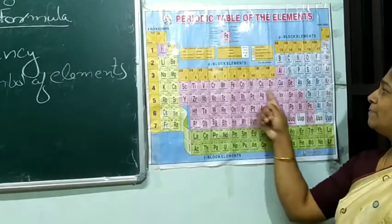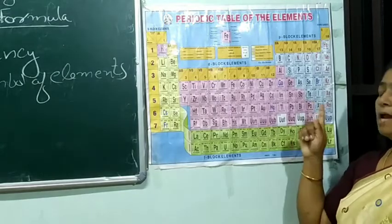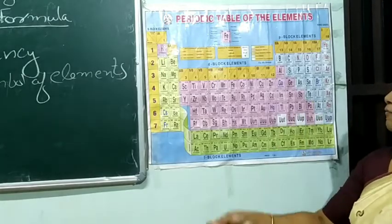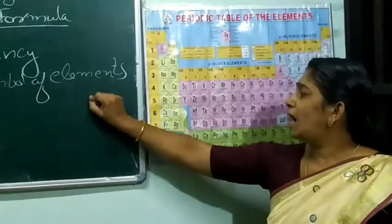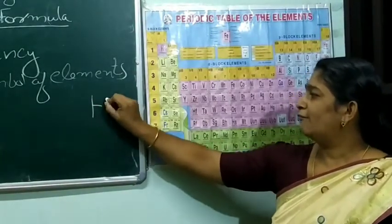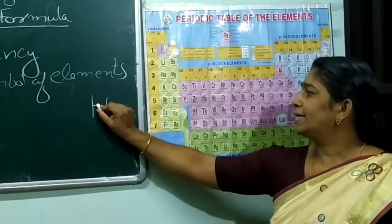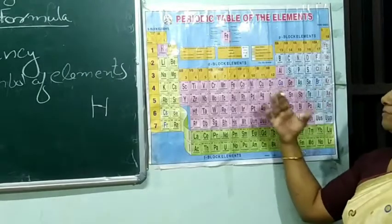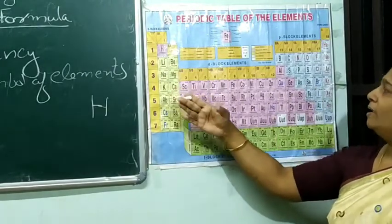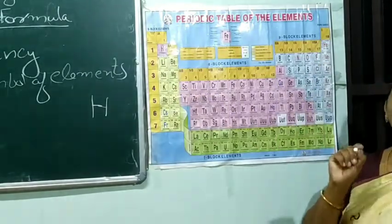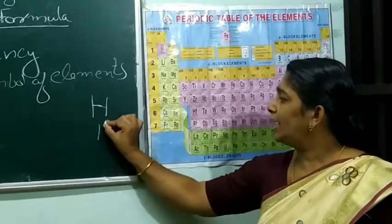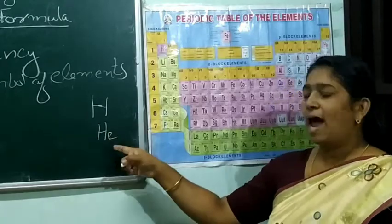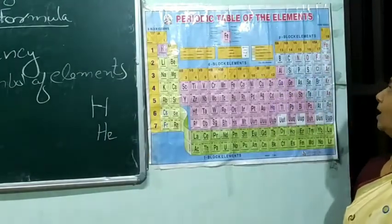You can see the symbol of elements here. How to write the symbol of elements? The first letter will always be a capital letter. For example, hydrogen — H only. Suppose another element begins with the letter H itself, then the second letter should be a small letter. For example, helium: first letter is H, second letter is e, and that is small letter. He.